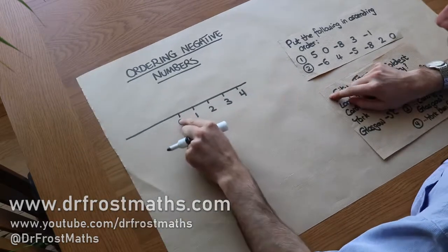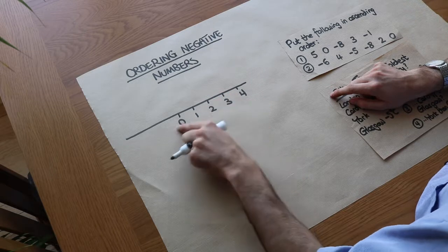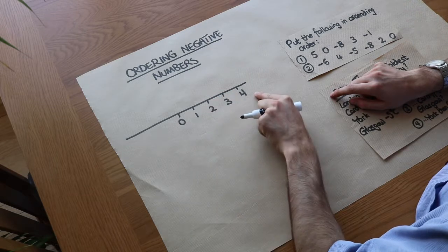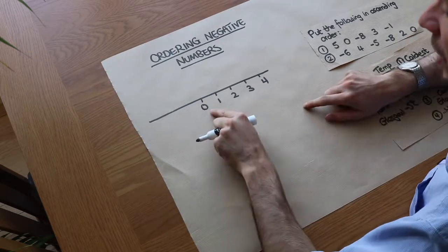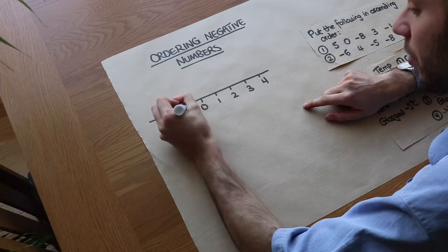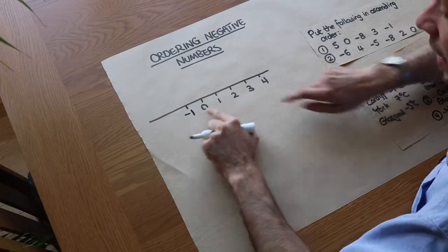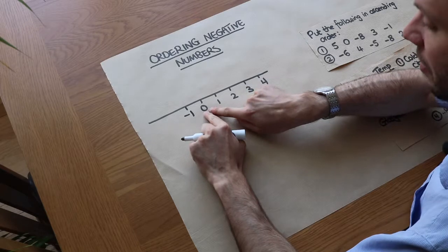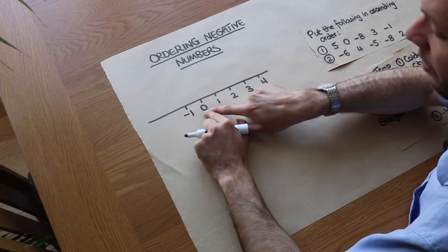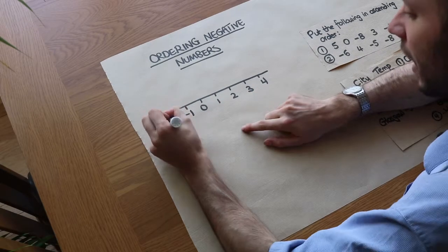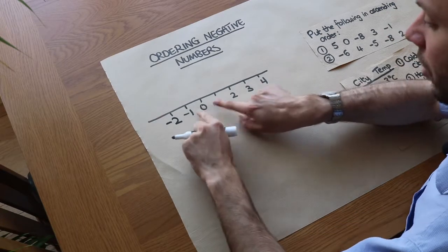We have a number line here with numbers in order: zero, one, two, increasing in value in this direction. But we can also go below zero, so we could have minus one here. Can you see that it's kind of symmetrical about zero? If we go up from zero it's one, and if we go down from zero it's minus one.